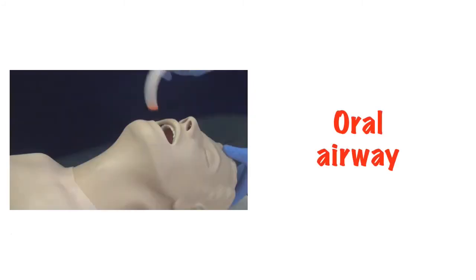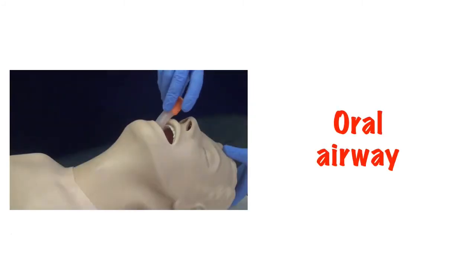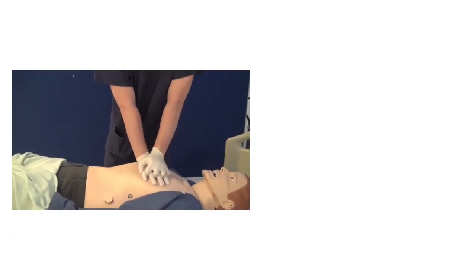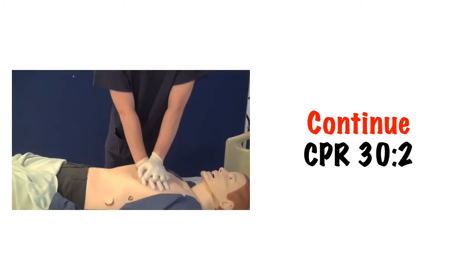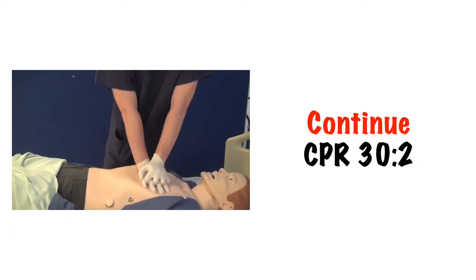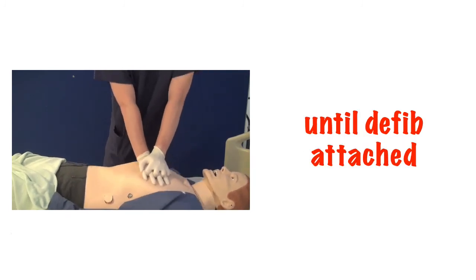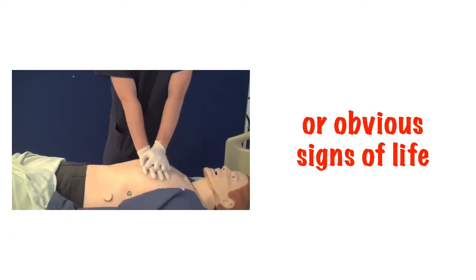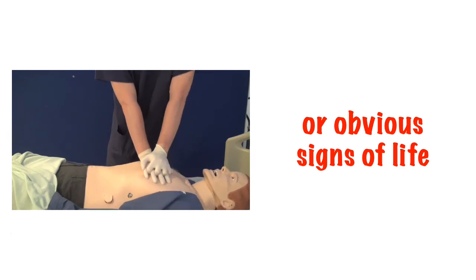An airway adjunct should ideally be used in conjunction with the bag valve mask as soon as possible. Once ventilations have been attempted, return to chest compressions and continue CPR at 30 compressions to two ventilations until the defibrillator is attached to the patient or the patient shows obvious signs of life.